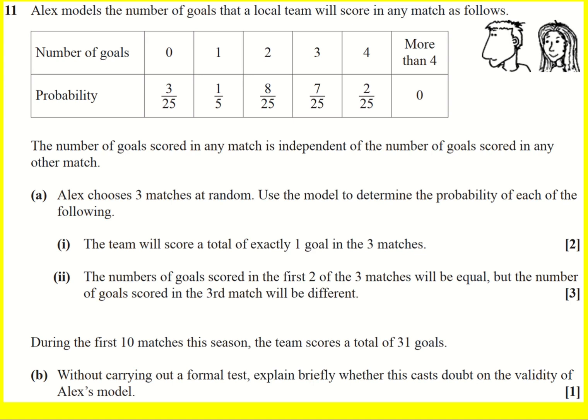The team will score a total of exactly one goal in the three matches. Now, there's actually a few different ways that the team could score exactly one goal. They could score one goal in the first match and then 0 in the next two. Or they could score 0 and then 1, then 0. Or they could score 0, 0, 1. So essentially this is a tree diagram sort of problem. Tree diagram is just there really to help you understand it. It's multiplying probabilities. But what we have is lots of different routes.